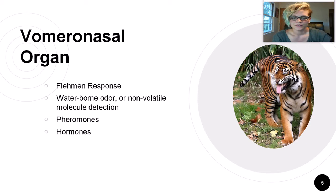The VNO detects molecules dissolved in liquid. In order to get these molecules in contact with the organ, animals will often make a funny face, such as this tiger here. This is called the flamen response. This sucking motion helps pull the waterborne or nonvolatile molecules into the vomeronasal organs so that they may be processed.